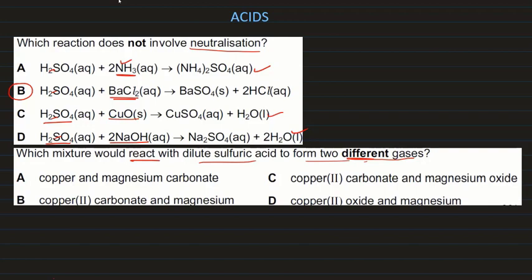Which mixture would react with sulfuric acid to form two different gases? Copper does not react with dilute acid because it is very unreactive, so no gas is produced. Magnesium carbonate gives carbon dioxide gas. Copper carbonate gives carbon dioxide and magnesium gives hydrogen gas — so that mixture produces two different gases: carbon dioxide and hydrogen. That is the answer.